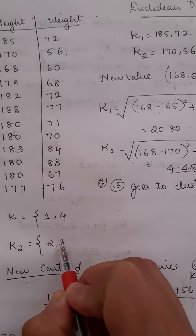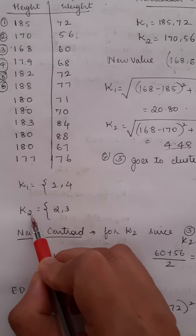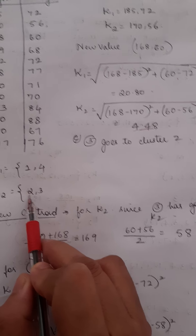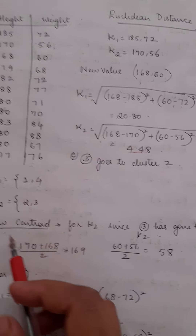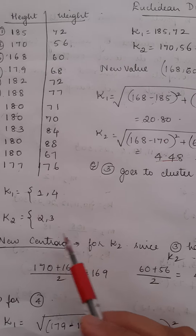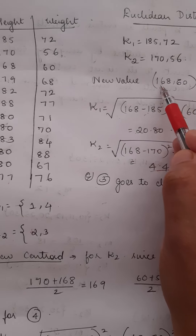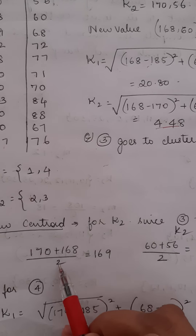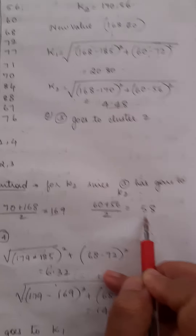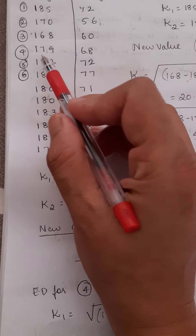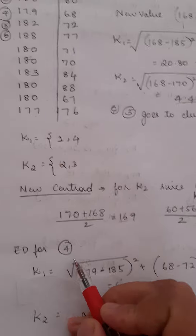So the third row is added to K2. In K1, only the first row remains initially. Since K2 has changed — the third row was added to it — we must recompute the centroid for K2. The new centroid is ((170 + 168) / 2, (56 + 60) / 2) = (169, 58). The next data point, the fourth row (179, 68), must now be compared to the first cluster centroid and the updated K2 centroid of (169, 58).